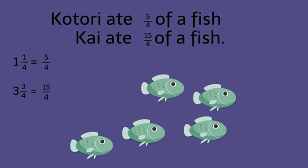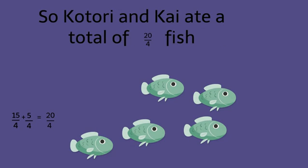1 and 1 fourth equals 5 fourths. 3 and 3 fourths equals 15 fourths. 15 fourths plus 5 fourths equals 20 fourths. So we can see that Katori and Kai ate a total of 20 fourths fish.